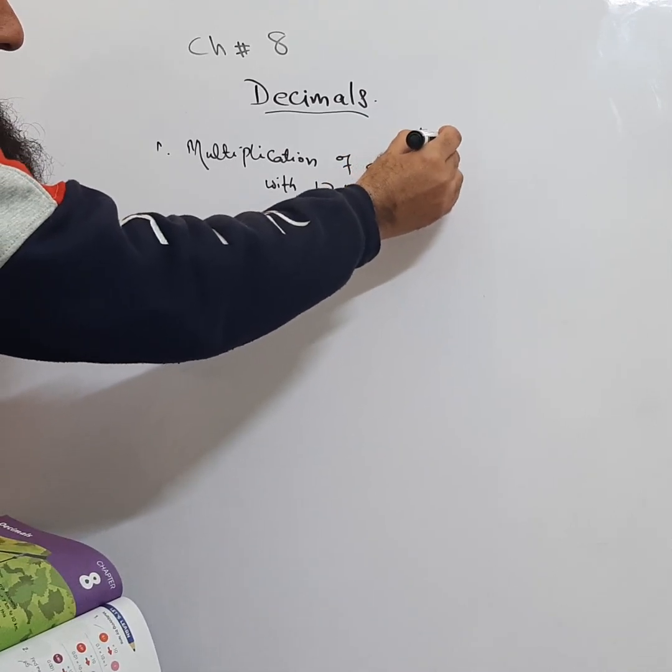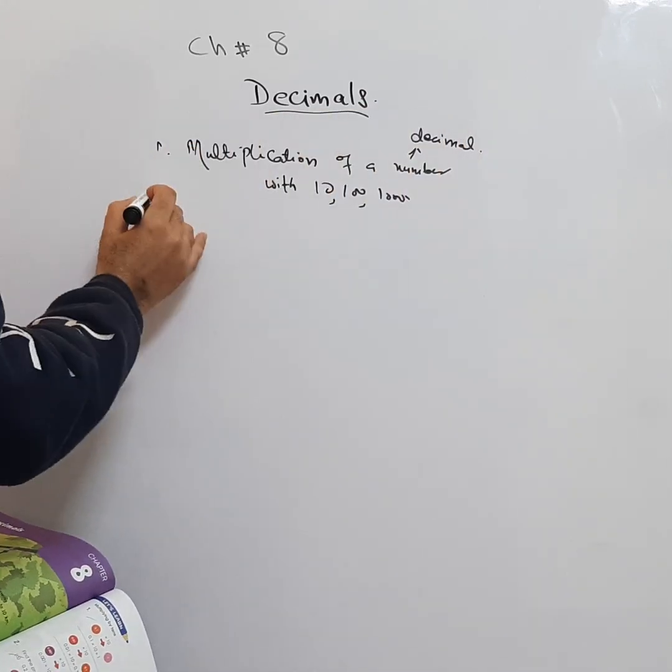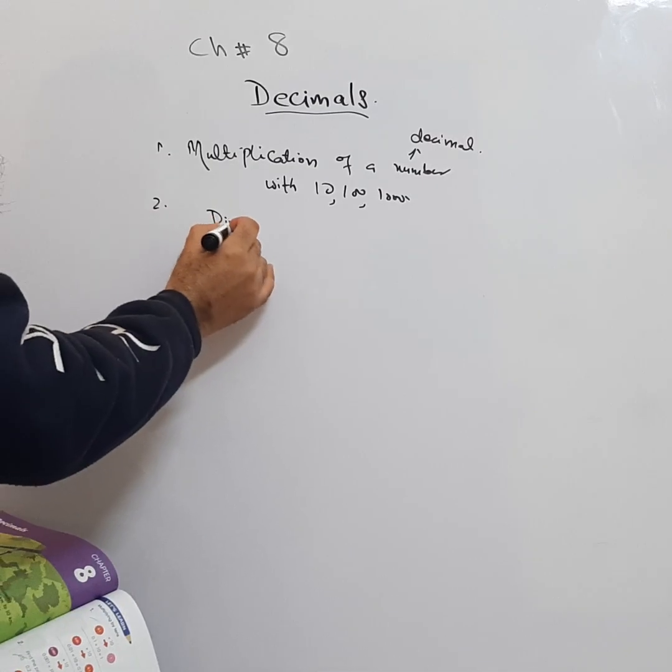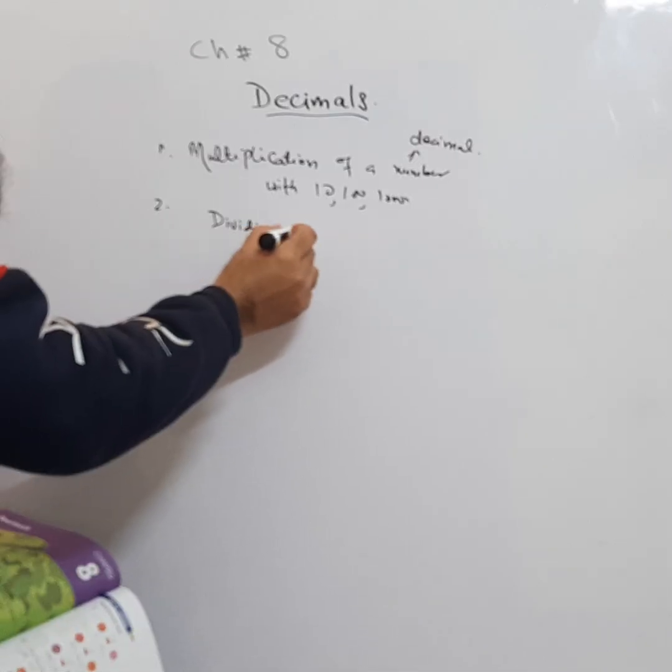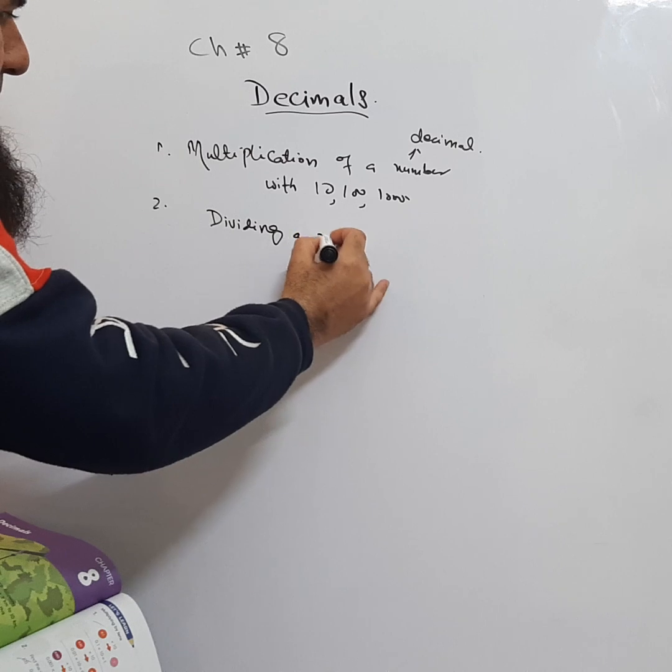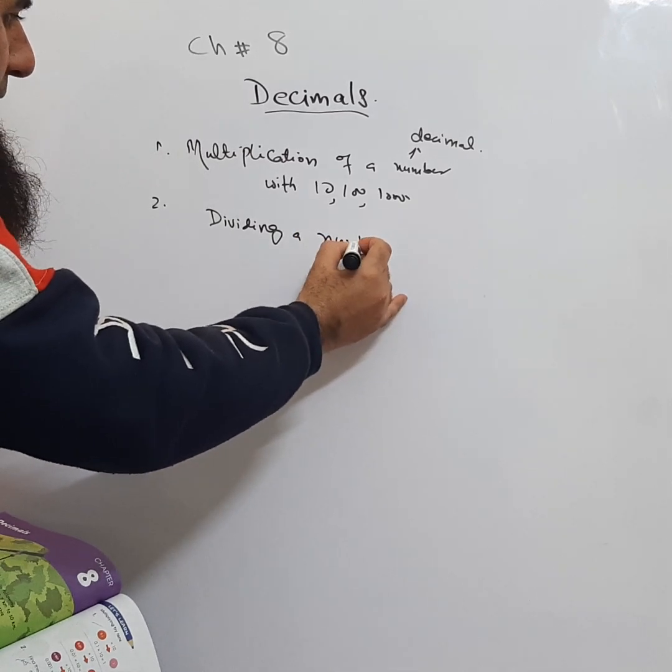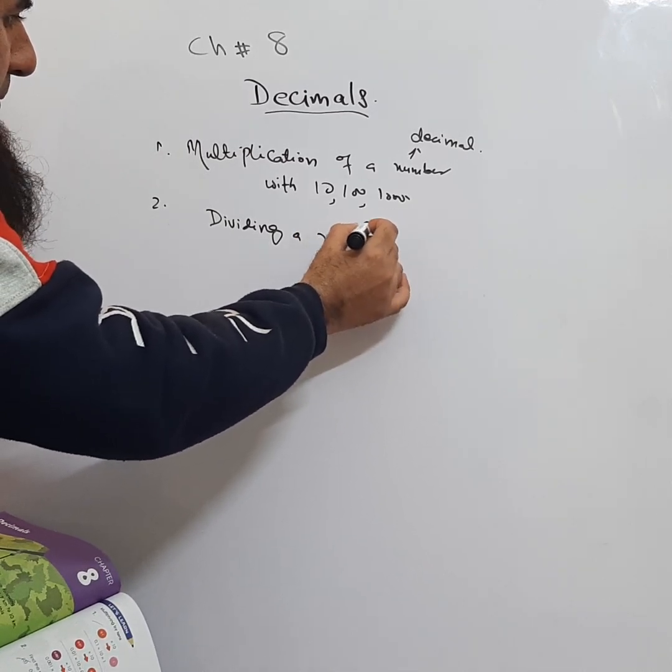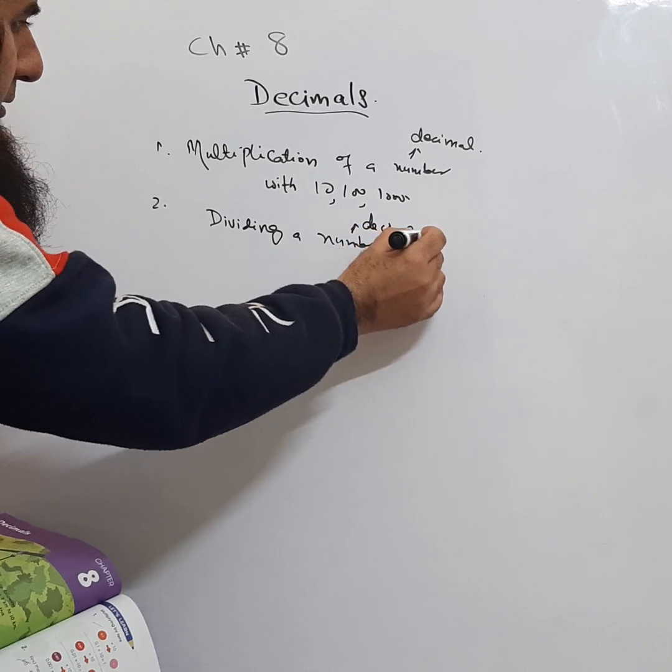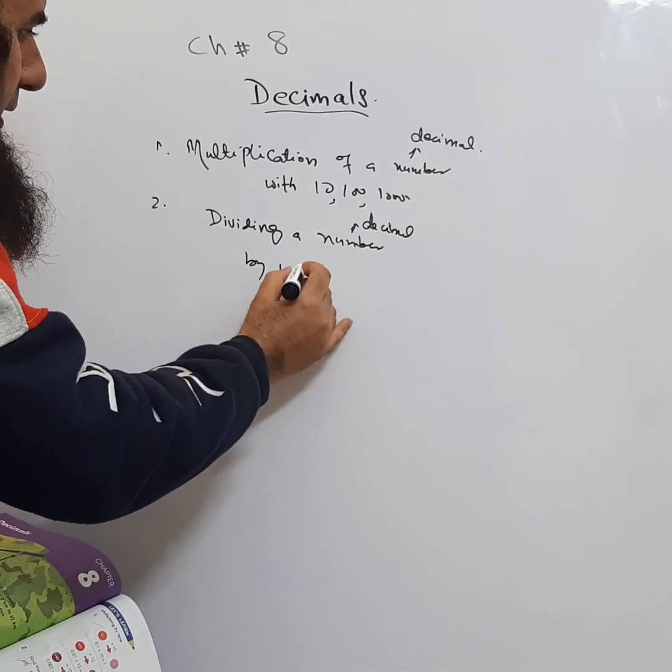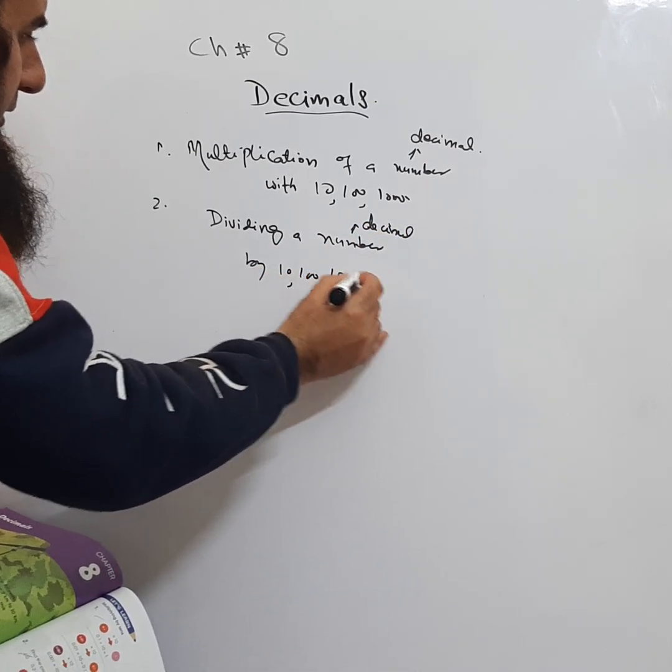Then we will study dividing a number, meaning a number having a decimal, by 10, 100, or 1000.